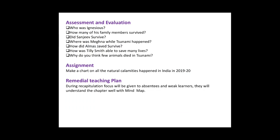For assessment and evaluation, I will give students questions like: Who was Ignatius? How many of his family members survived? Did Sanjeev survive? Where was Meghna when the tsunami happened? How did Almas Javed survive? How was Tillie Smith able to save many lives? Why did few animals die in the tsunami? More questions can be added while teaching. For the assignment, students will make a chart on all natural calamities that happened in India in 2019 and 2020.